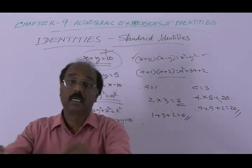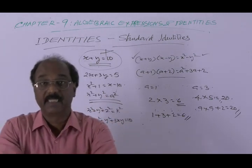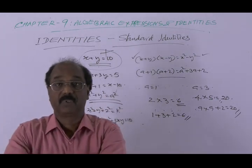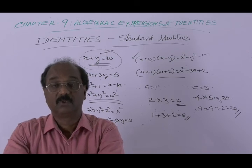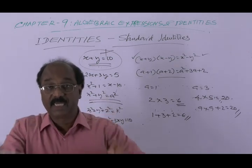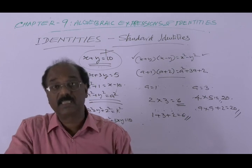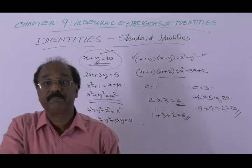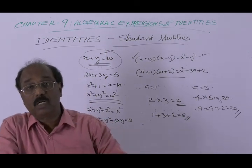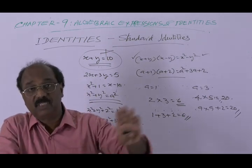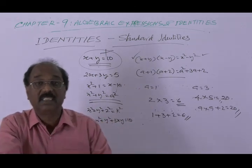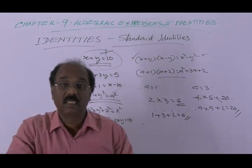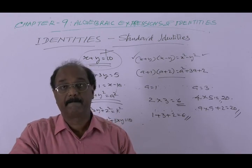Such equations are called identities. That is the definition: an equation which is true for all values of the variables involved is called an identity.